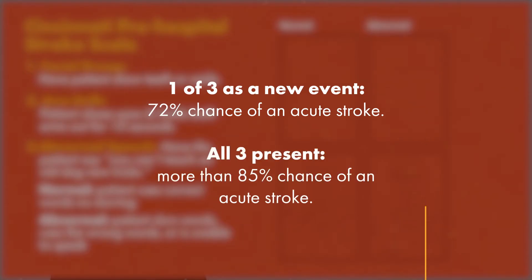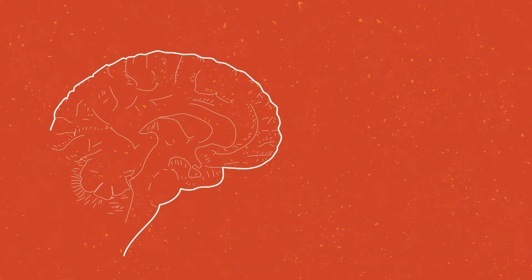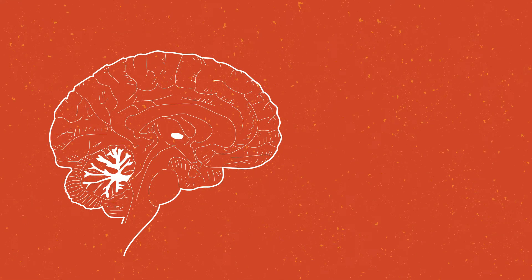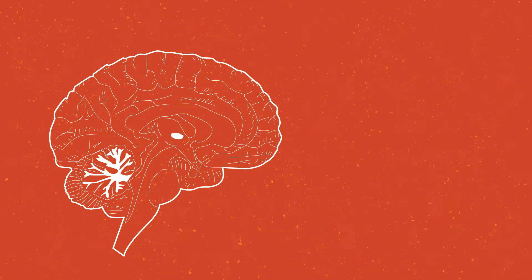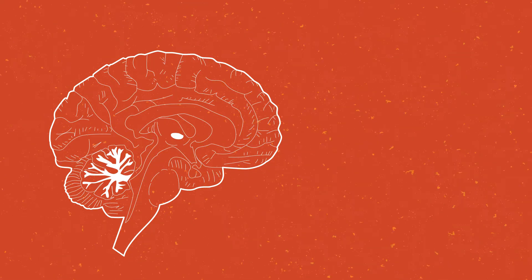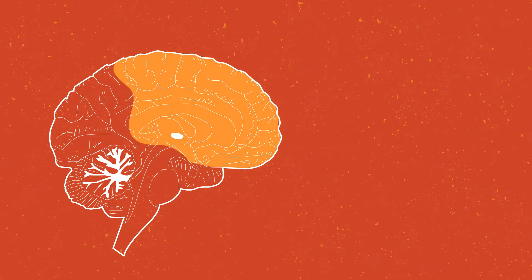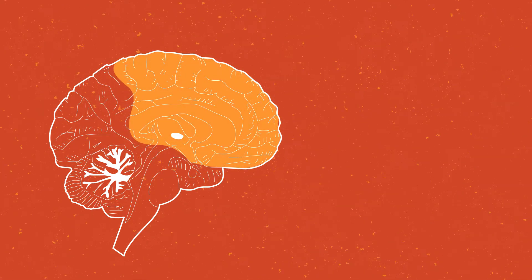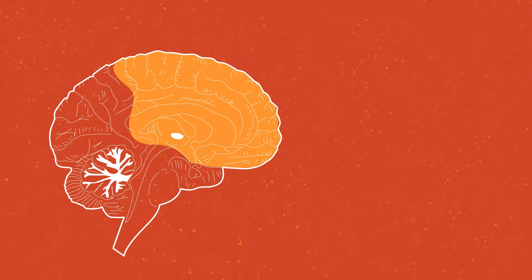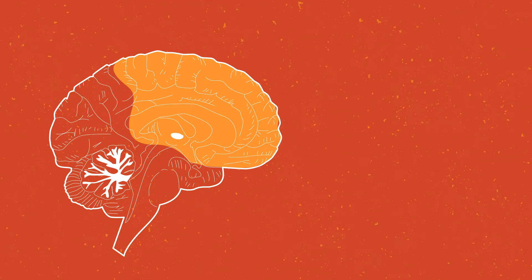If all three findings are present, the chance of an acute stroke is more than 85%. The Cincinnati Pre-Hospital Stroke Scale is effective in detecting patients with stroke who are candidates for treatment, especially those with stroke affecting the anterior portion of the brain. Unfortunately, it is not as good at identifying patients with stroke affecting the posterior portion of the brain.